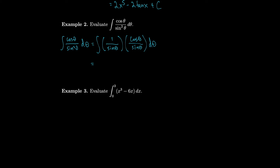1 over sine theta is just cosecant theta, and cosine over sine is cotangent. We might remember that cosecant times cotangent is the derivative of minus cosecant. So the antiderivative of this is minus cosecant plus C, where C is some constant.